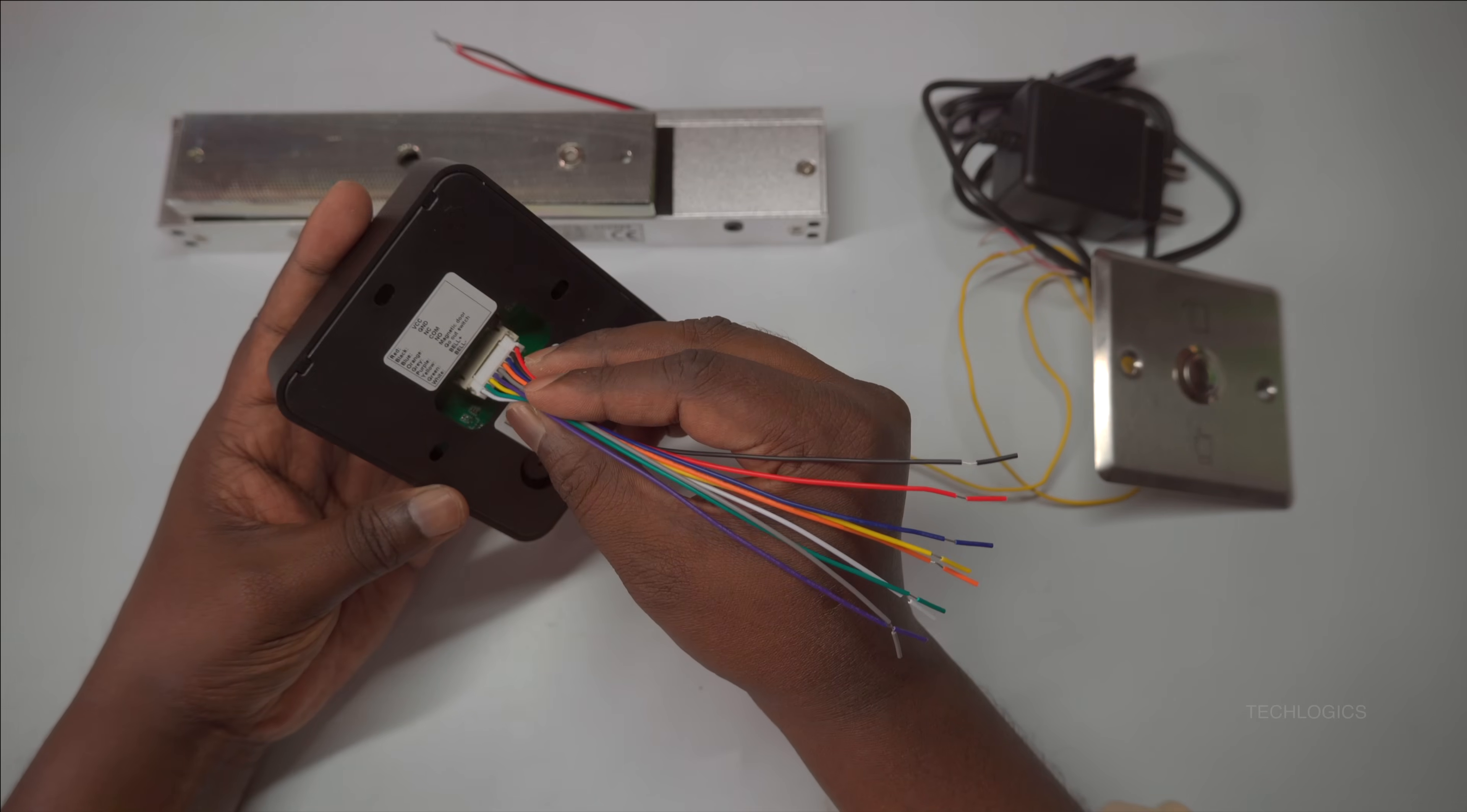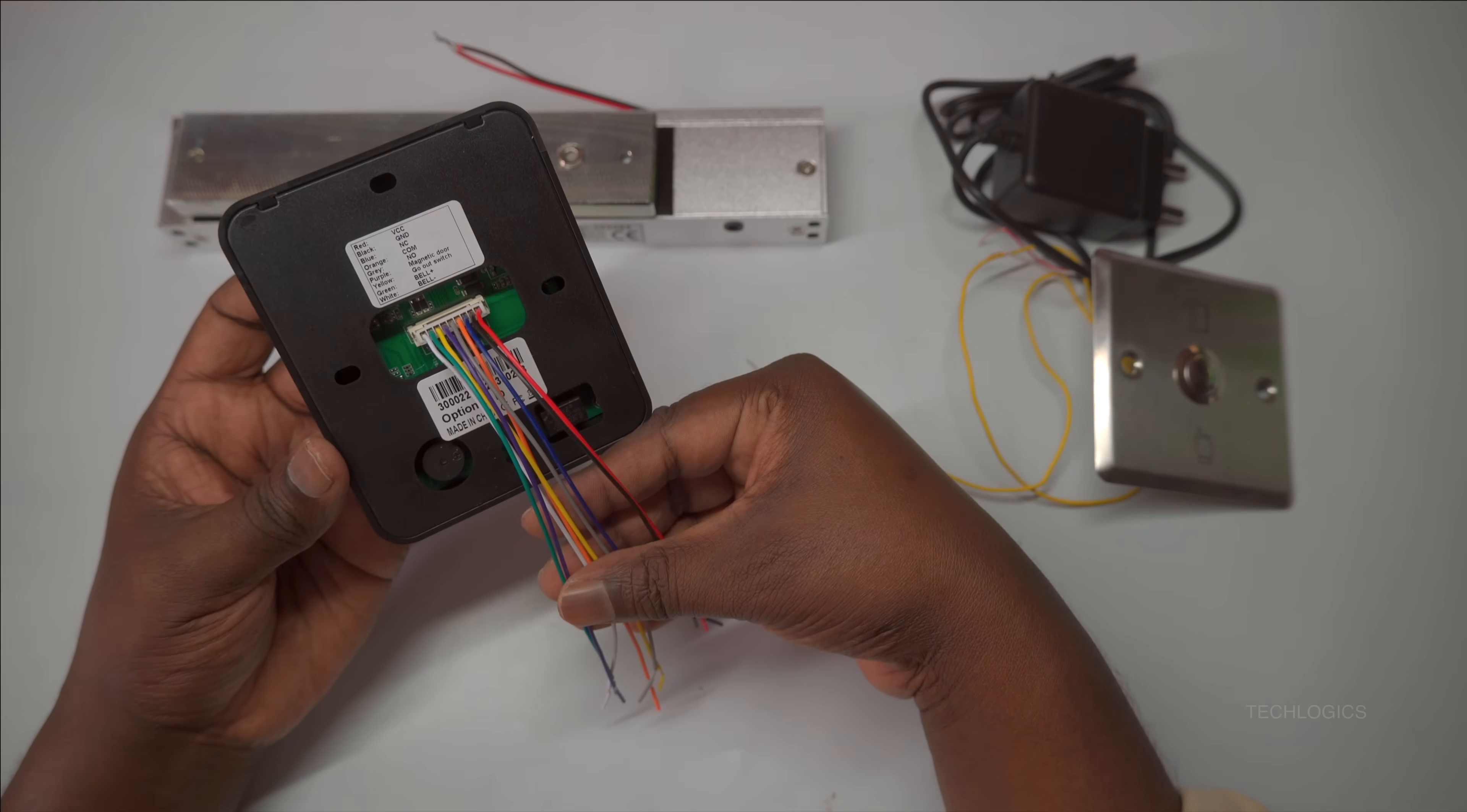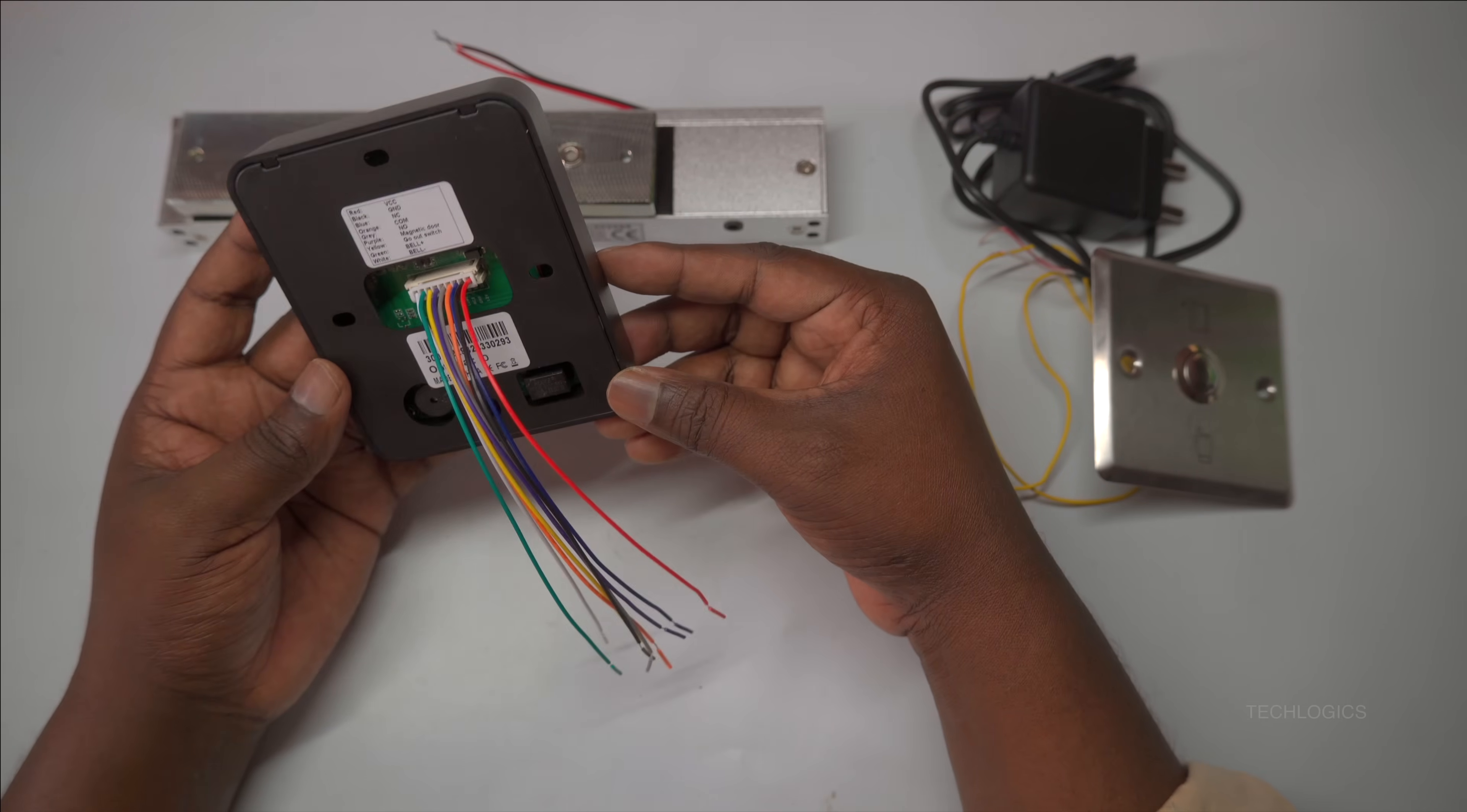Next, connect the provided 9-pin connector to the access controller slot. This connector will allow you to terminate and connect other devices such as the electromagnetic lock, exit switch, and power supply. Make sure it is firmly plugged in to ensure a reliable connection for proper system operation.